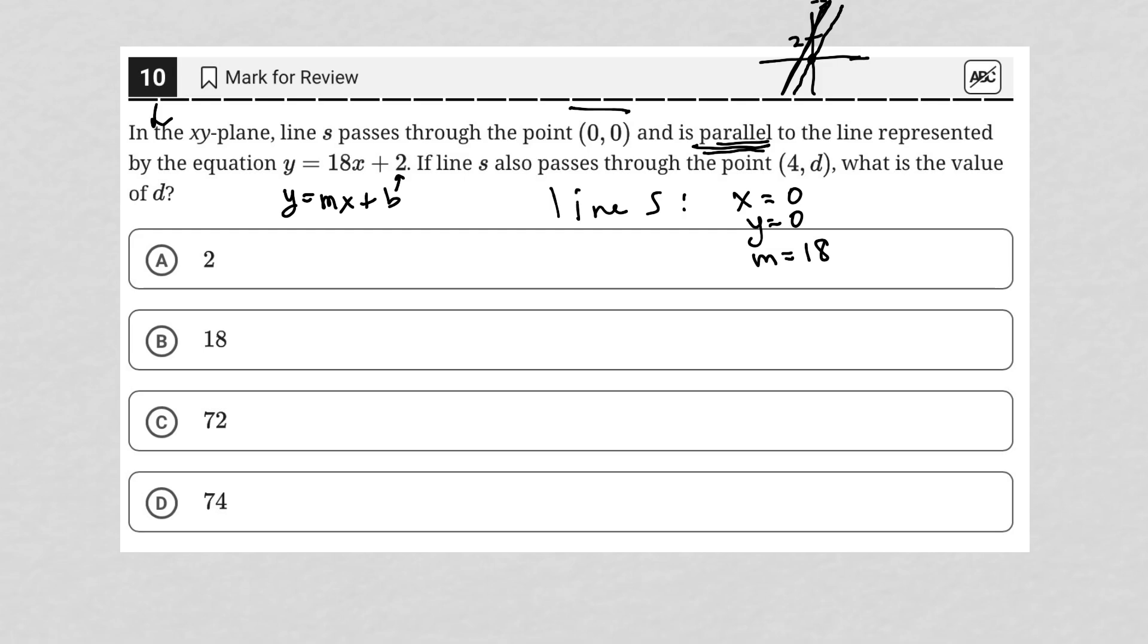The question goes on to say if line s also passes through the point (4, d), which means I have an x value at 4 and a y value at d, what is the value of d?